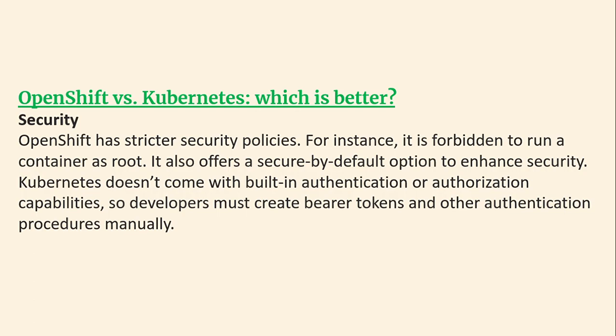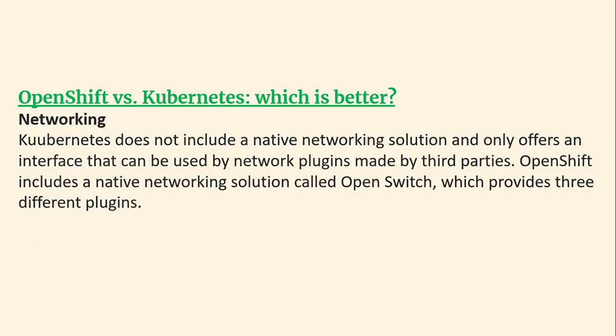Comparing security: OpenShift has strict security policies — for instance, running a container as root is forbidden. It also offers a secure-by-default option to enhance security. Kubernetes does not come with built-in authentication or authorization capabilities, so developers must create bearer tokens and other authentication procedures manually. For networking, Kubernetes does not include a native networking solution and only offers an interface for third-party network plugins. OpenShift includes a native networking solution called Open vSwitch, which provides three different plugins.